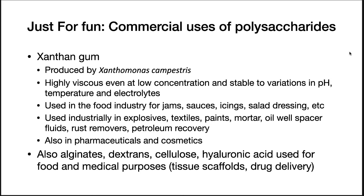It is used in the food industry for jams, sauces, icings, salad dressing, and many other things. After this lecture, go look at a food label in your kitchen, especially of a dressing. Xanthan gum also has uses in industry for explosives, textiles, paints, mortars, oil well-spacer fluids, rust removers, and petroleum recovery. You will even find it in pharmaceuticals and cosmetics.